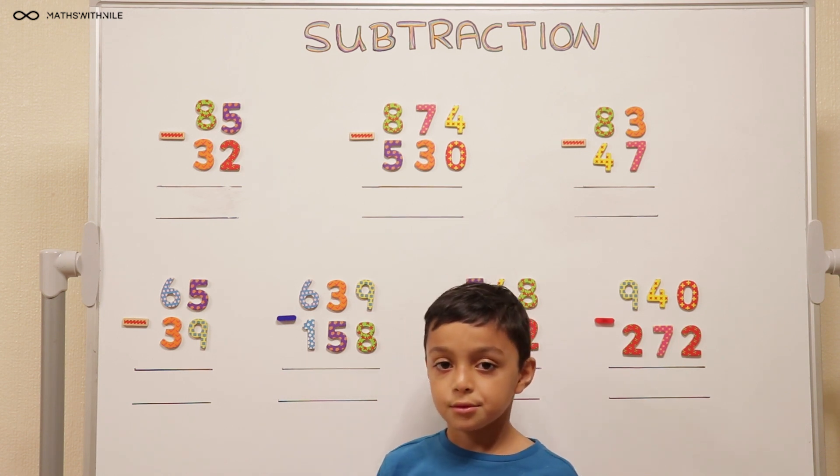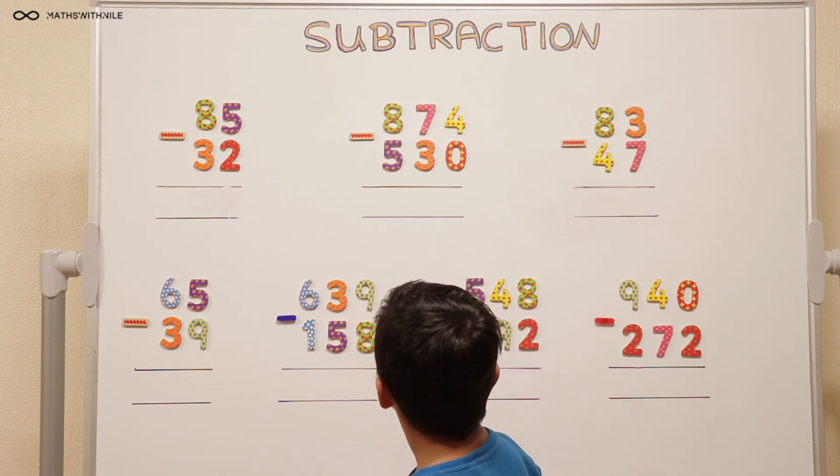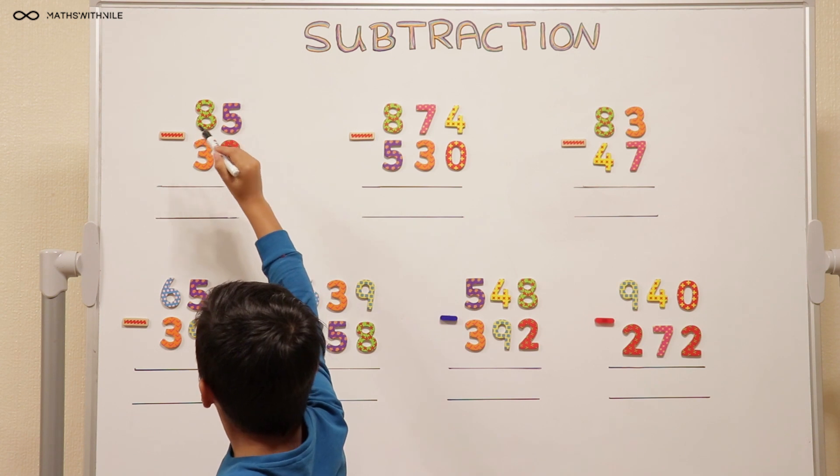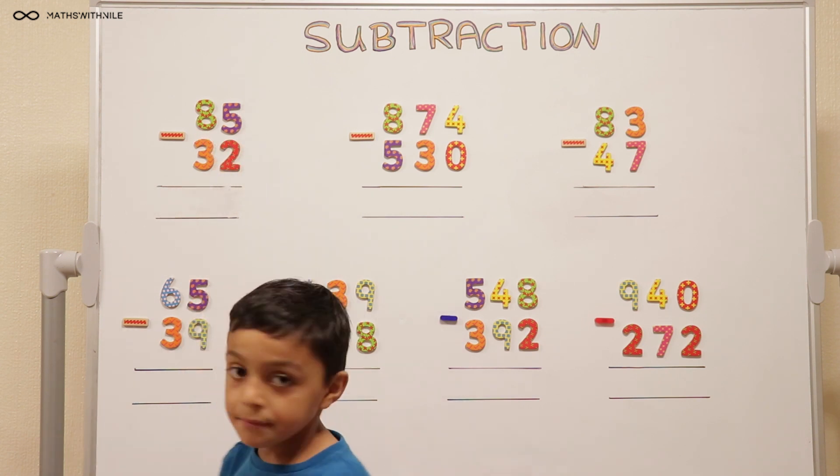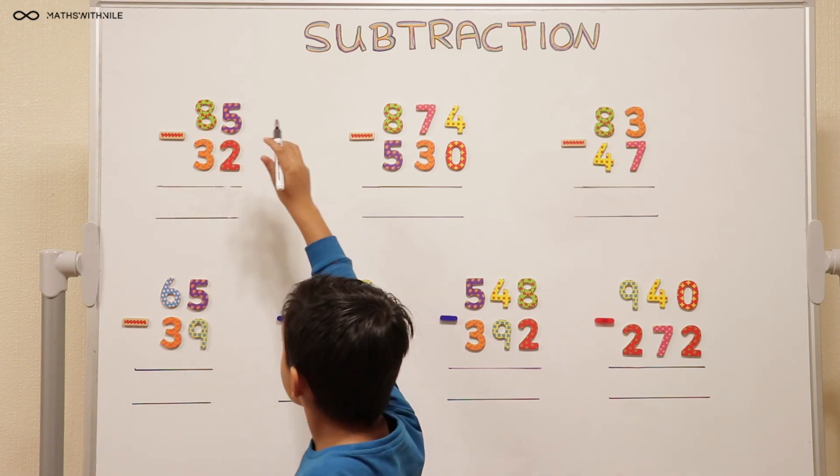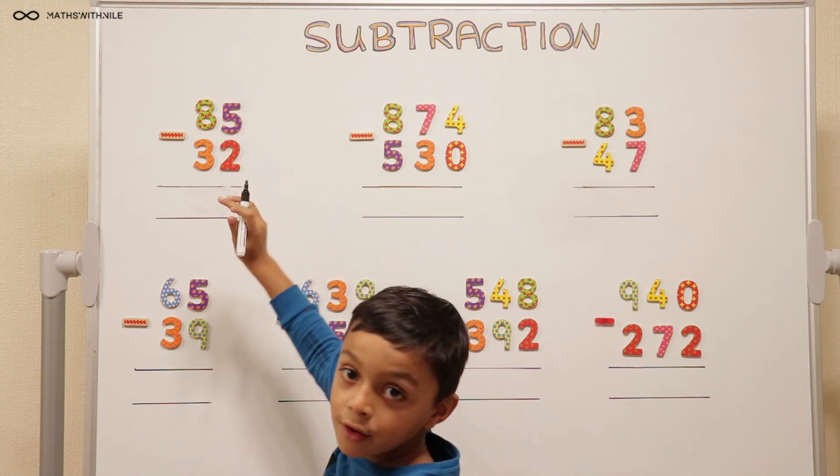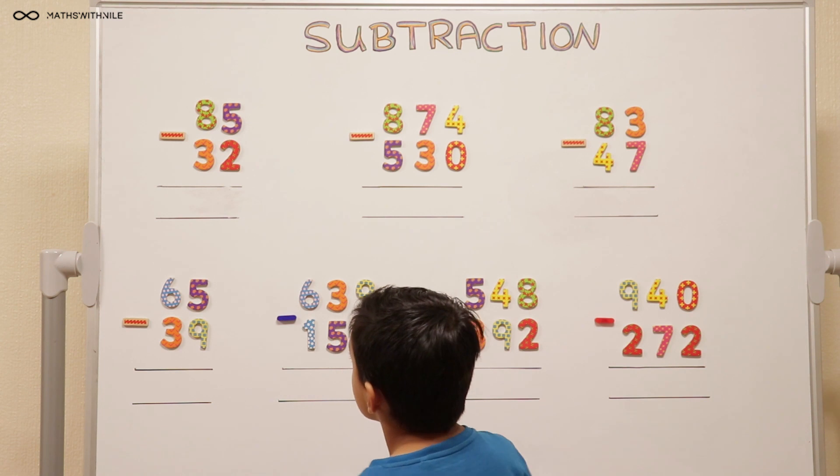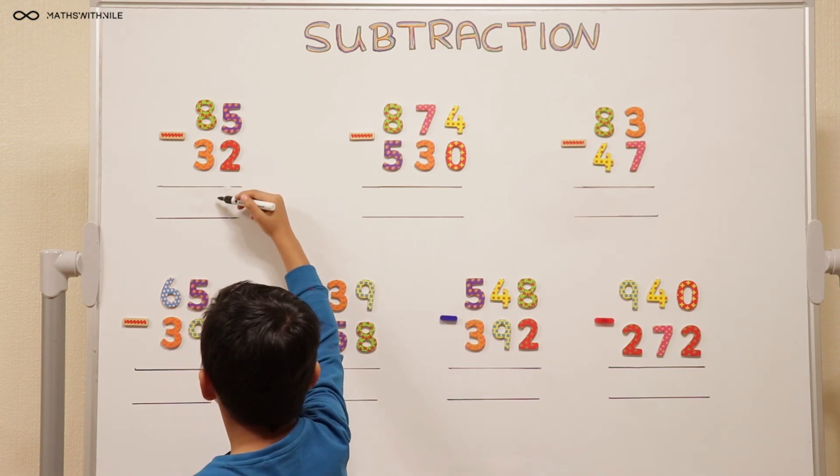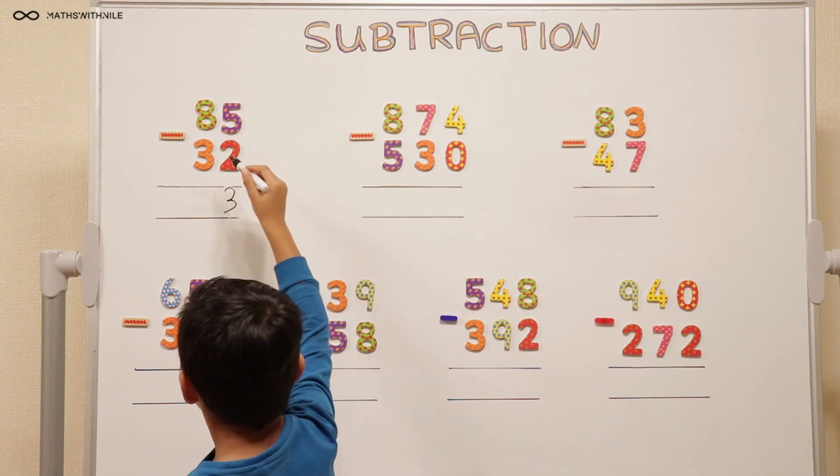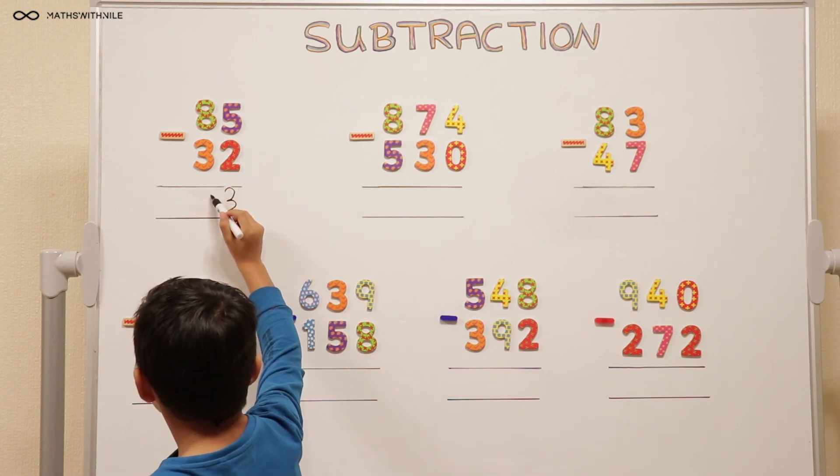Can we look at the first number and tell us what's happening? 85 take away 32. What are you going to do first? We're always going to take away the units first. So 5 take away 2 equals 3. Very good.